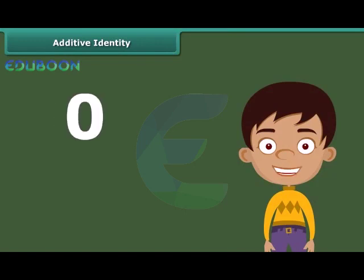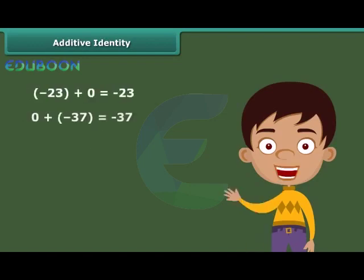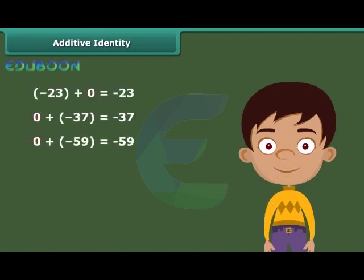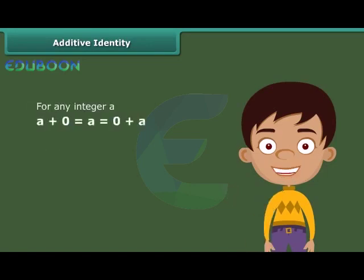Zero is the additive identity for whole numbers. Similarly, if we add zero to any integer, we get the same integer. In general, for any integer a, a plus zero is equal to a, which equals zero plus a.